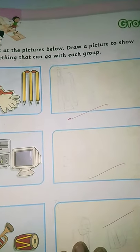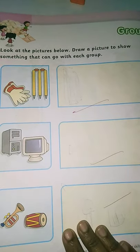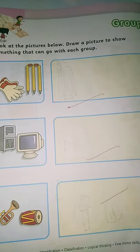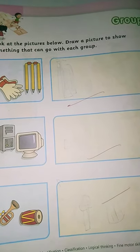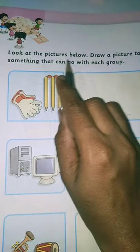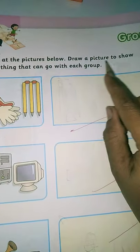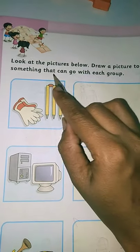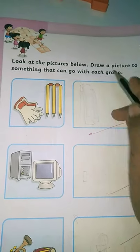Now, how to solve this exercise I will be telling you and accordingly you can solve the exercise and you can complete this. Okay, now first we will read it out what is given in the question. Look at the pictures below. Draw a picture to show something that can go with each group.